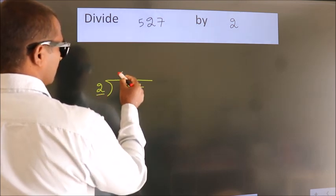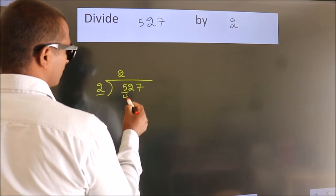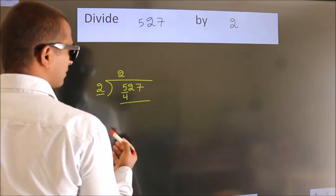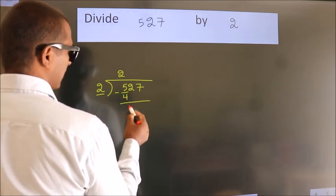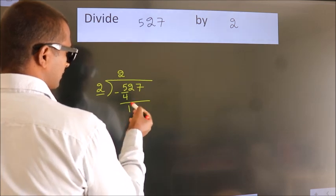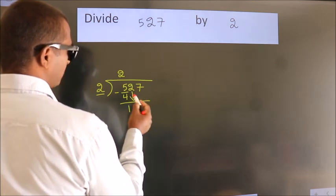2 times 2 is 4. Now we should subtract, we get 1. After this, bring down the beside number.